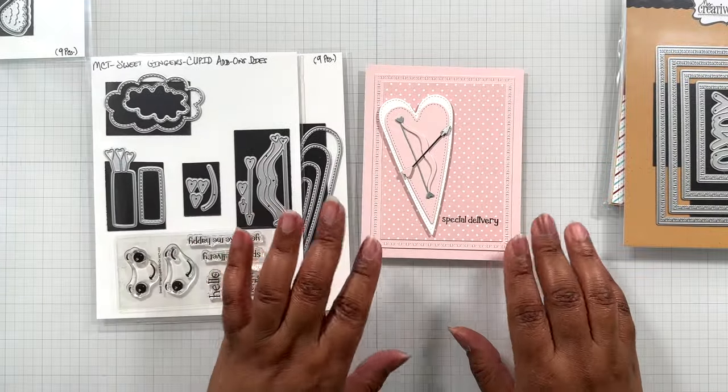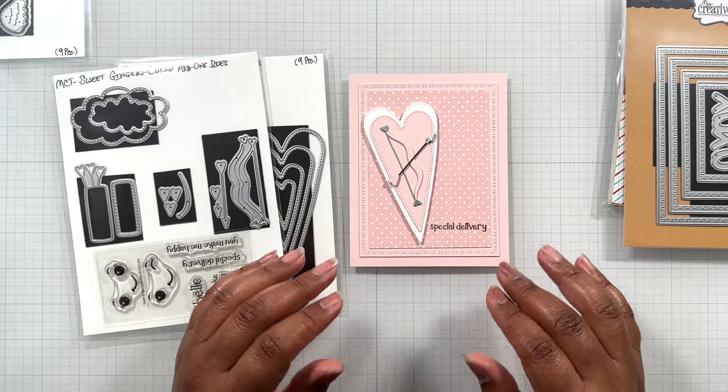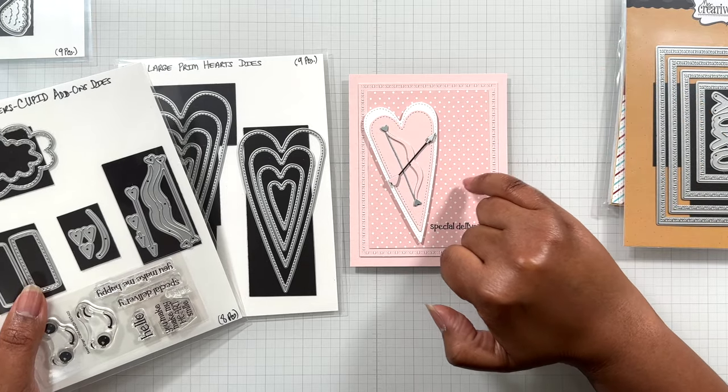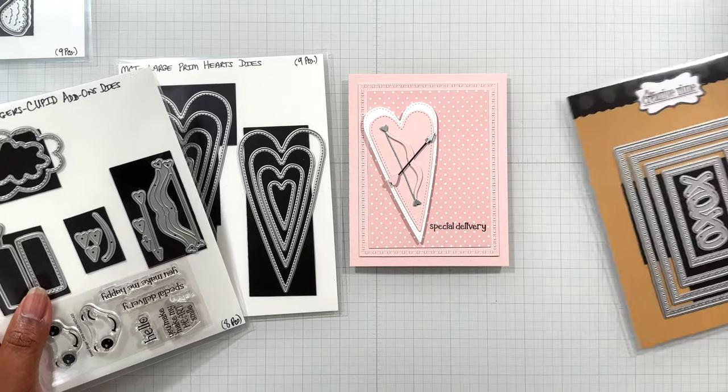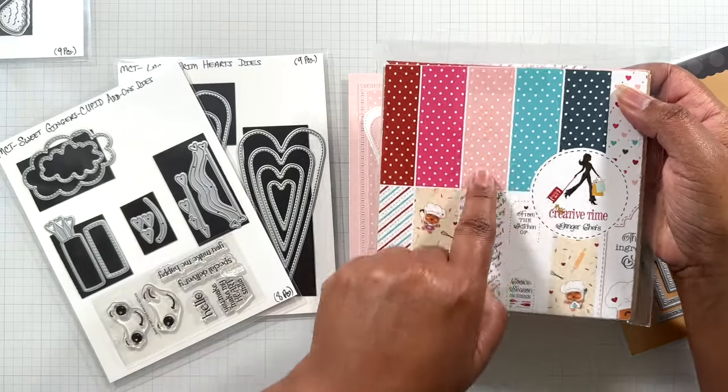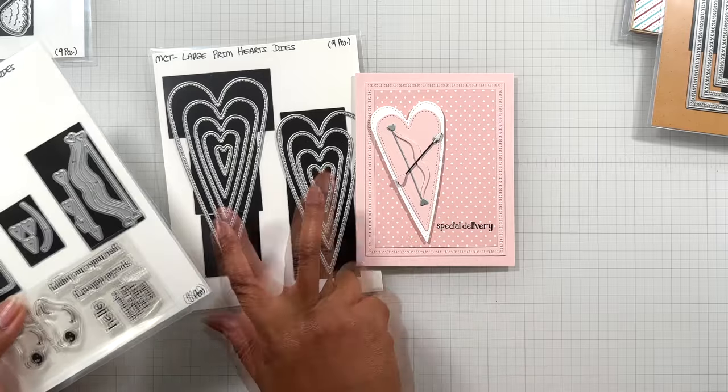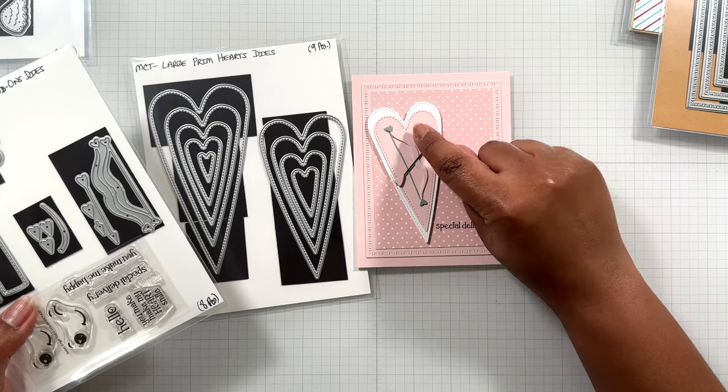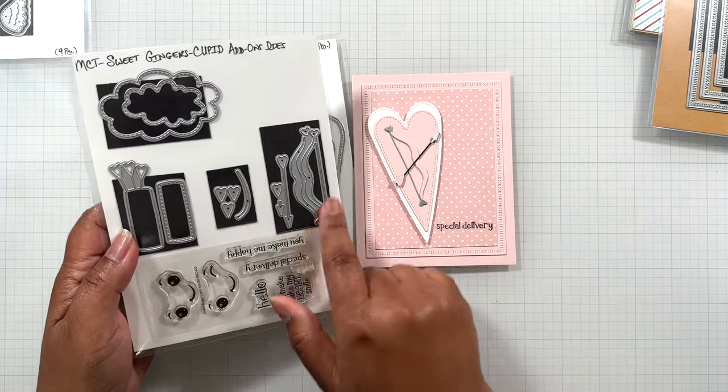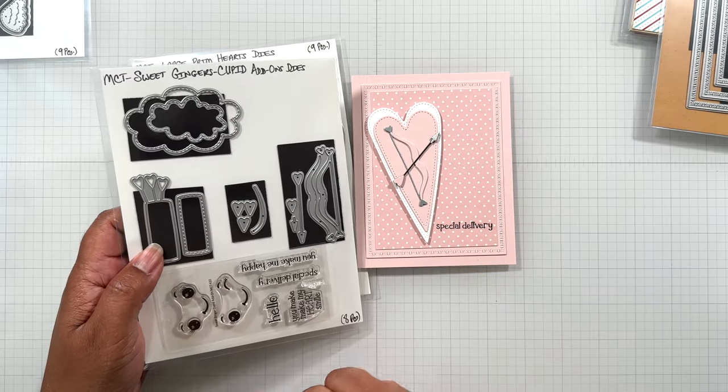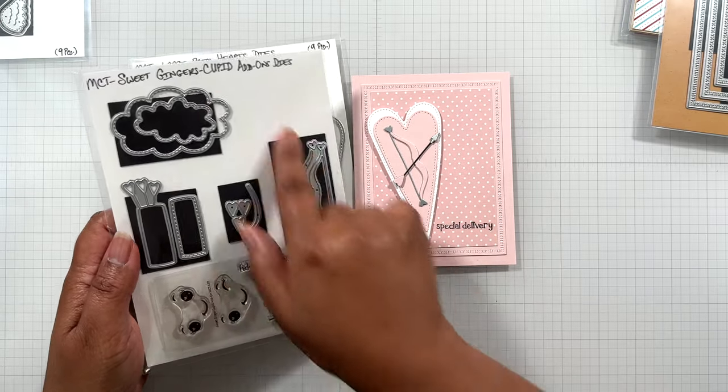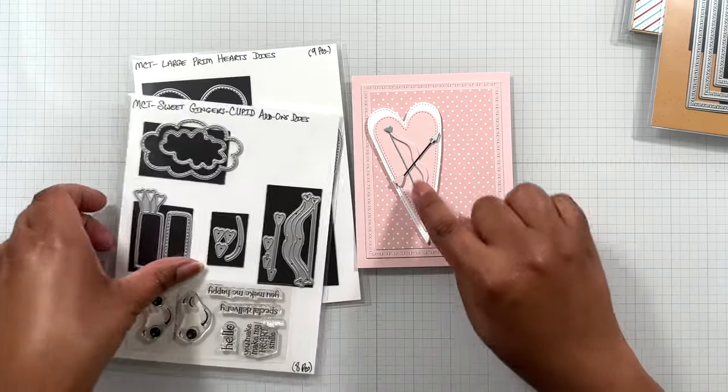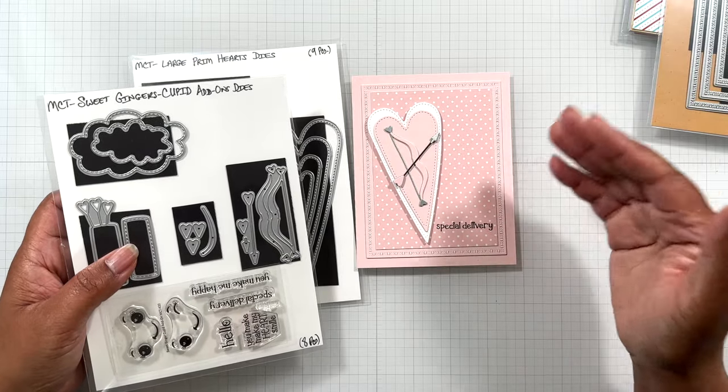Up next crafters I have a clean valentine card here. This is in lighter pinks. It's a pale pink colorway. All dictated by this pattern paper from this paper pad. Ginger chefs which is in stock. I use this color right here. The hearts I'm using two of the primitive hearts, the large prim hearts layered up. I did white cardstock and then came on with the pink. And then I just did the arrow from the sweet ginger cupid add-on die set which also comes with a stamp and die. Sometimes you just want a very clean card. That's what I was going for.